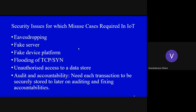More security issues requiring misuse cases in IoT: eavesdropping, and fake servers — sometimes we feel the server is providing genuine services, we communicate, and at the end we find out it is a fake server, causing all our messages, data, and money to be lost.